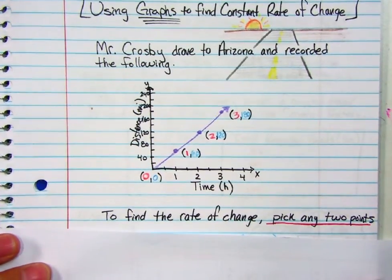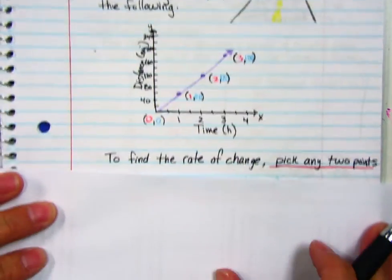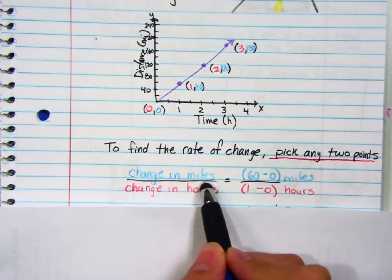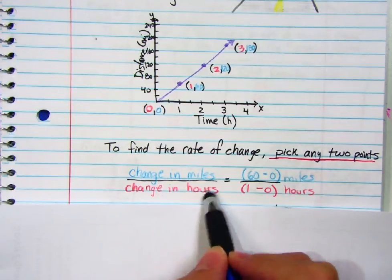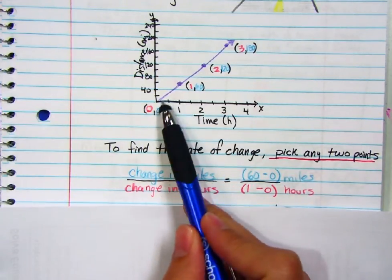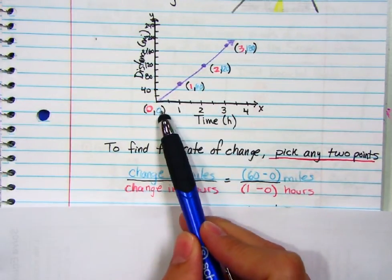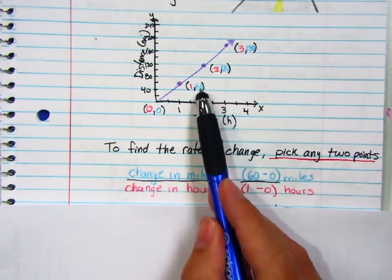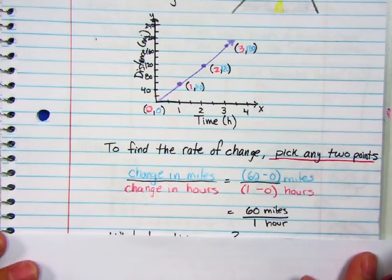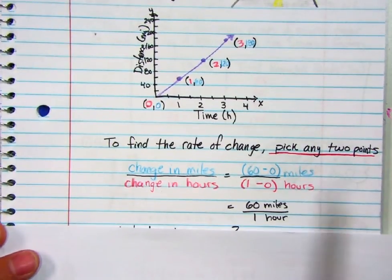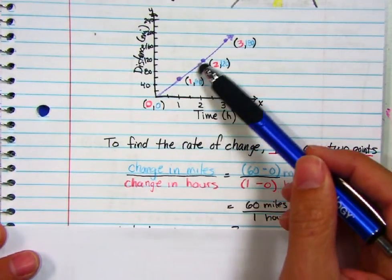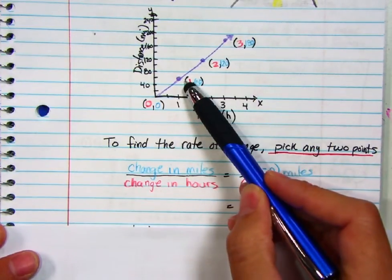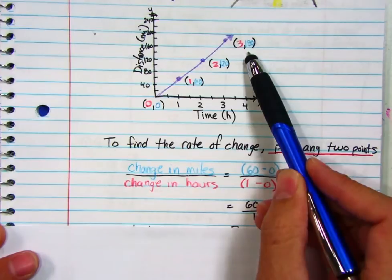Find the rate of change by picking any two points. Let's take a look at what that looks like — change in miles over change in hours. I just chose two points. From 0 to 60, that was 60 miles and it took one hour. So I can say that's 60 miles an hour. He was driving 60 miles per hour the entire time. That makes sense: 60 for one hour, 120 for two, 180 for three.